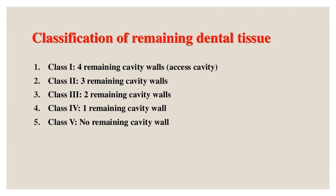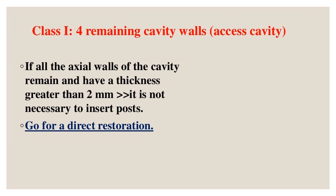Classification: Class I — 4 remaining cavity walls (access cavity only). If all axial walls remain with thickness greater than 2 millimeters, it is not necessary to insert posts; proceed with a direct restoration. Class II — 3 remaining cavity walls: loss of one cavity wall with small access cavity does not necessarily require post insertion, as remaining hard tissue provides enough surface for adhesive systems.